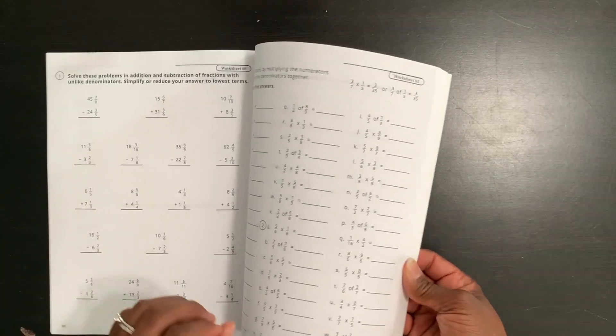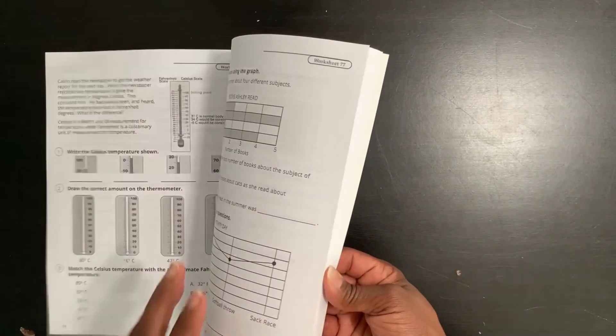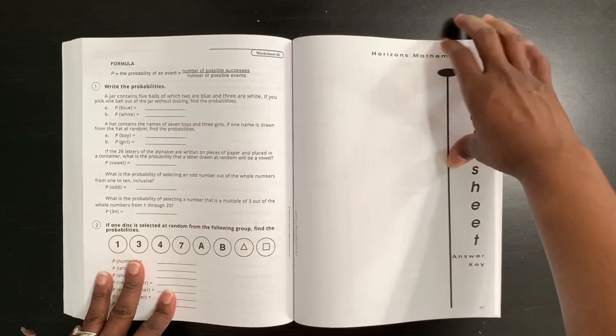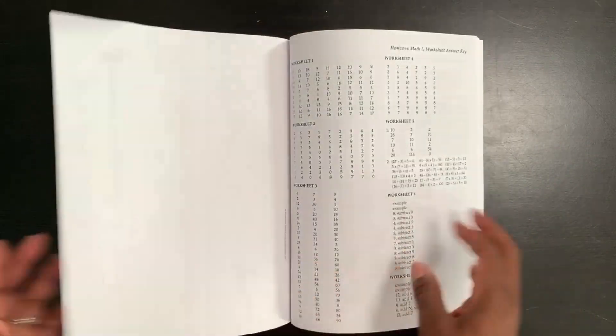Not every lesson has a worksheet. So there may be a concept that you need your child to work on that there's not a worksheet for. So you may have to find supplemental work for that. Here are worksheet answer keys for all of the worksheets, which is super helpful, you do not have to guess.